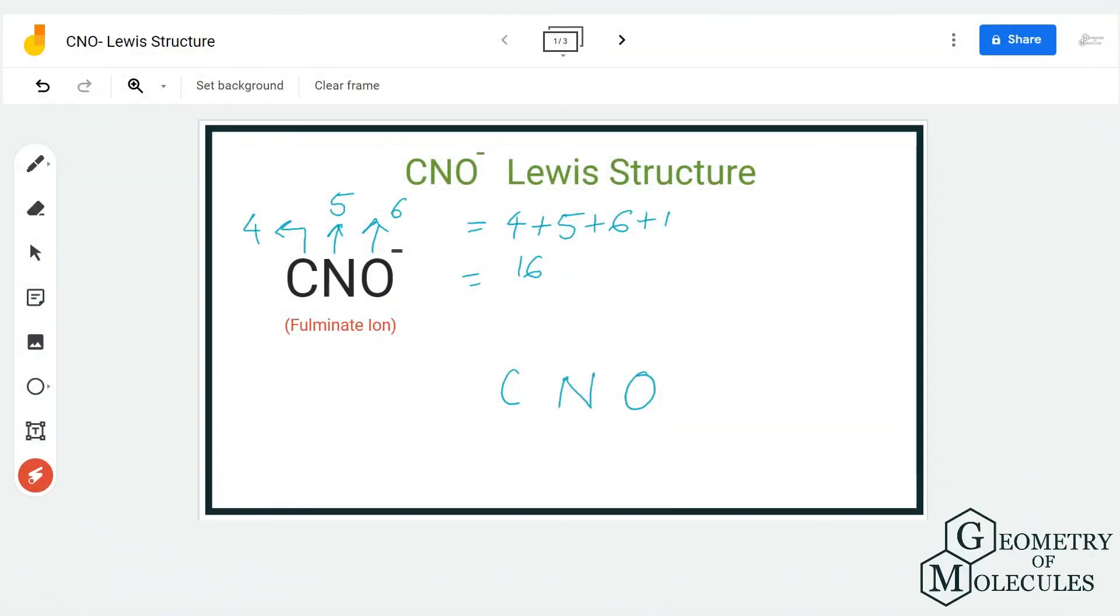Hi guys, welcome back to our channel. In today's video we are going to look at the CNO minus Lewis structure, which has nitrogen in the central position. If you want to look at the cyanide Lewis structure, let us know in the comment section below.